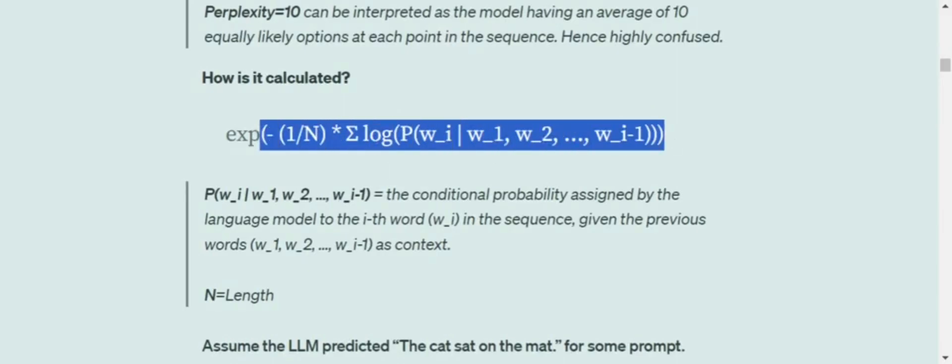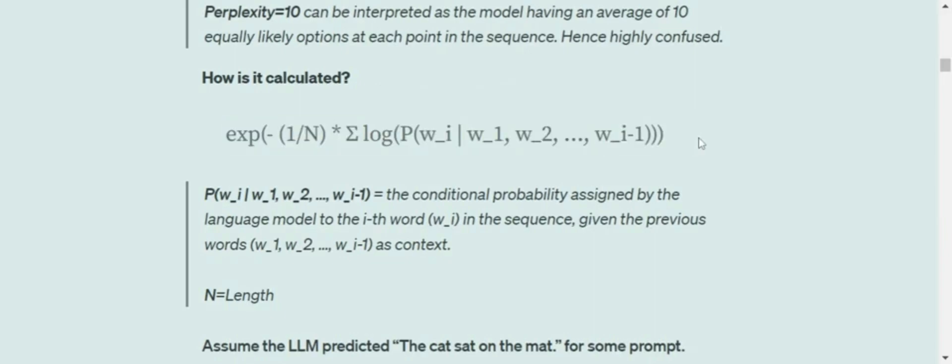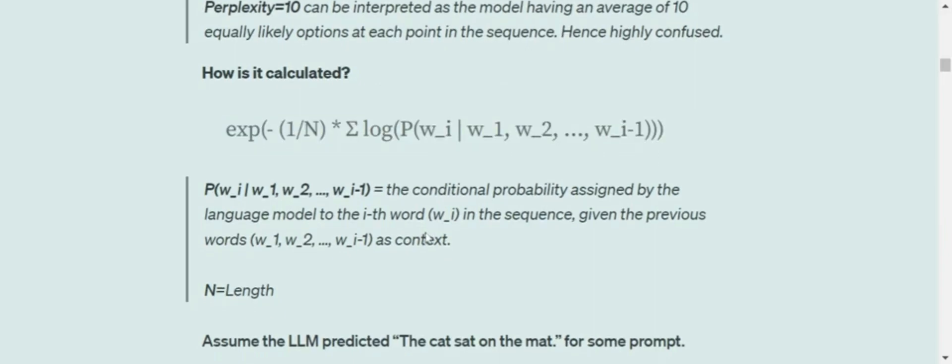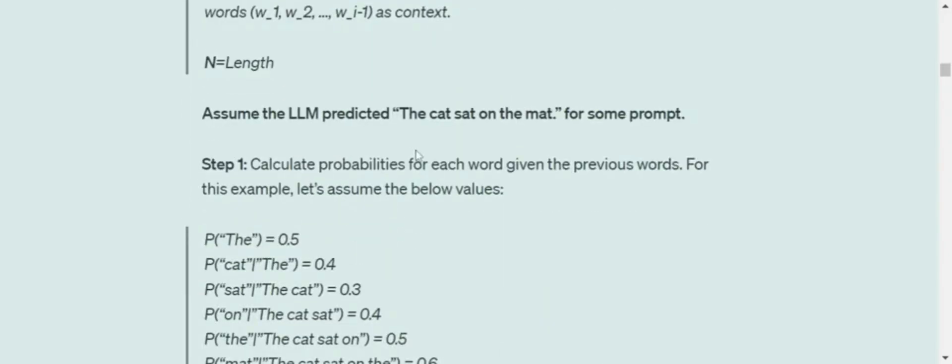How is it calculated using this equation? This mammoth equation might look dangerous, but I'll demystify it. Assume the LLM predicted 'The cat sat on the mat' for some prompt. Remember that for perplexity you don't need to have any ground truth.